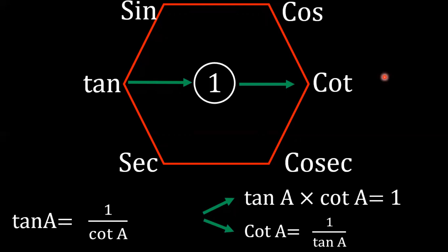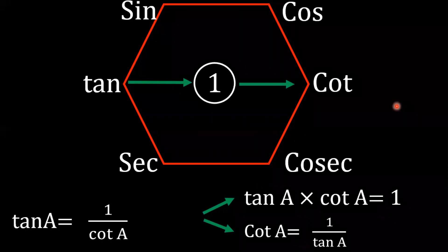This is the inverse relation. Here you have got nine inverse relations. In the squared relation we moved in a 7 pattern; here in the inverse relation we move along the diagonal. tan a = 1 / cot a, and sec a = 1 / cos a. So you can see: cos a = 1 / cosec a, or cosec a = 1 / cos a. You can move both ways along the diagonal. It will now be easier to memorize these formulas.